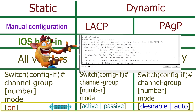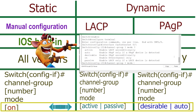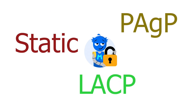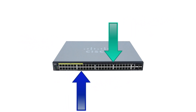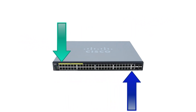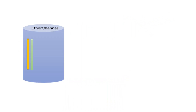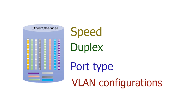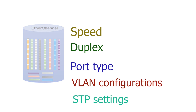No matter which configuration method you choose, all EtherChannels have some restrictions. You can't add any port to an EtherChannel. All ports in an EtherChannel must have the same speed, duplex, port type, VLAN configurations, and STP settings.